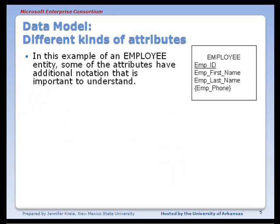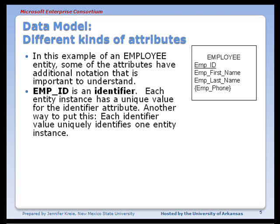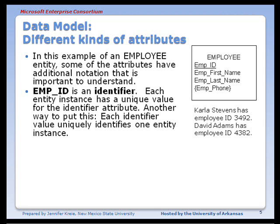There are different notations for attributes that are important to be familiar with. What we see here is emp_ID is underlined, and that designates it as an identifier. An identifier is an attribute that can uniquely identify each entity instance. For example, Carla Stevens has an employee ID of 3492 — she is the only employee with that number, it can't be used again. David Adams has an employee ID of 4382. So the emp_ID has a value that's unique to each entity instance.